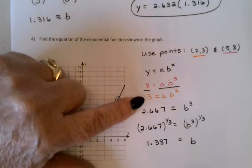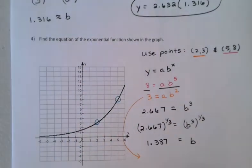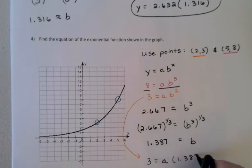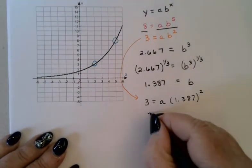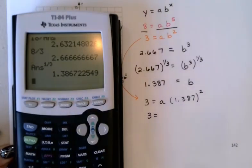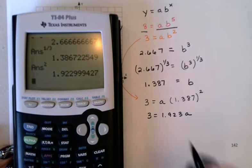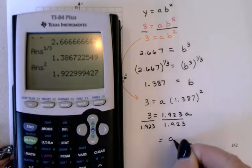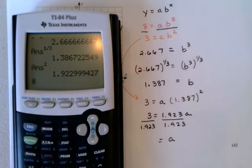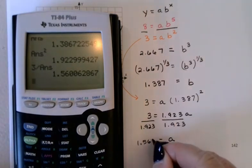Alright. Go back and use either equation to solve for a. Maybe I'll use the bottom one this time. 3 equals a times I now know b is 1.387 squared. Back to my value with lots of decimal places. Let's square that. It's about 1.923 a. And then I'll divide by 1.923. Again, these rounded-off values are just a convenience to keep track of my math, but when I do it in the calculator, I'm keeping the whole number. So 3 divided by that answer is about 1.560 if I keep three decimal places.